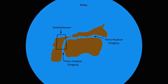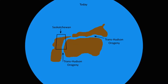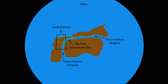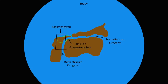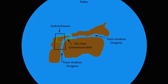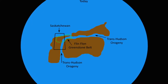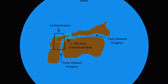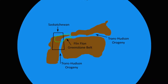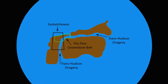The word orogeny comes from ancient Greek and literally translates as mountain creation. Along this suture in eastern Saskatchewan we have what is known as the Flin Flon greenstone belt. The greenstone name arises from the green hue of the rocks that compose it.